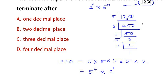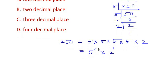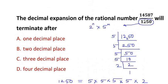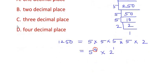Once we get the denominator in terms of powers of 2 and powers of 5, we just look at the highest power out of the two. In this case, the highest power is 4. That means the given expression terminates after 4 decimal places.